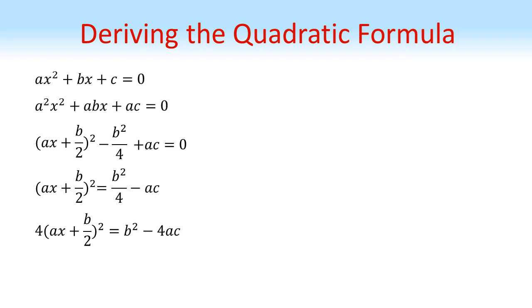Now if you notice we've got four, which is a square number, and we've got a square bracket on the left. So if we square root, we get two lots of ax plus b over two is equal to plus or minus the square root of b squared minus four ac.